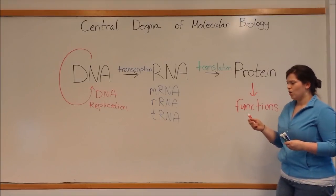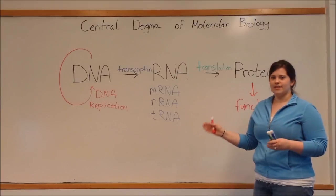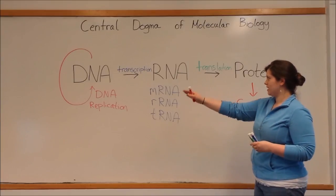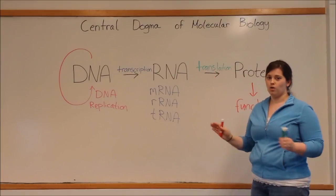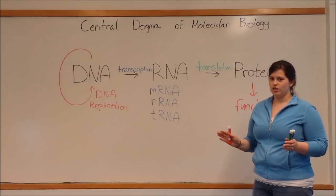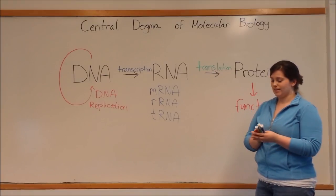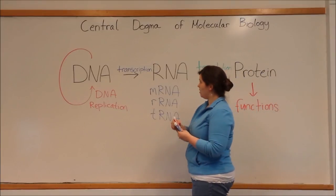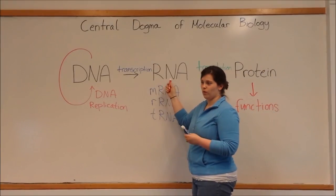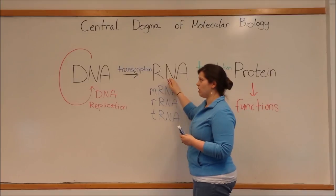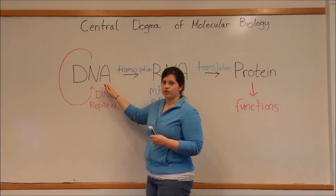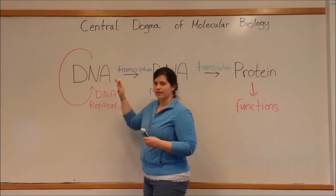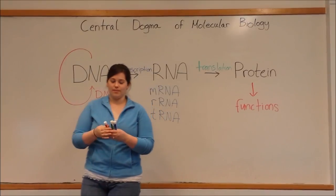Now, when the central dogma of molecular biology was set down, it was thought that DNA went to RNA went to protein, always, no exceptions. It turns out that there is one important exception. There are examples of RNA where genetic information is contained in RNA and it moves backwards to DNA. Can you think of what example that might be?